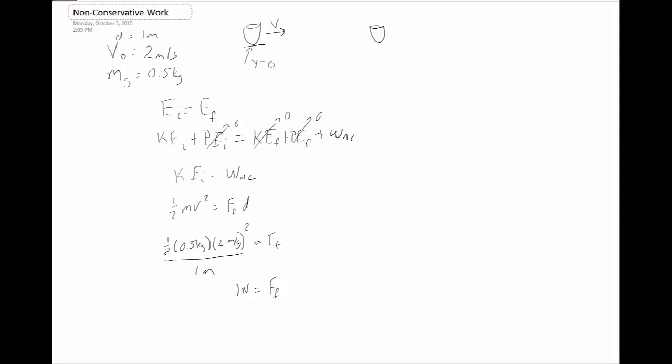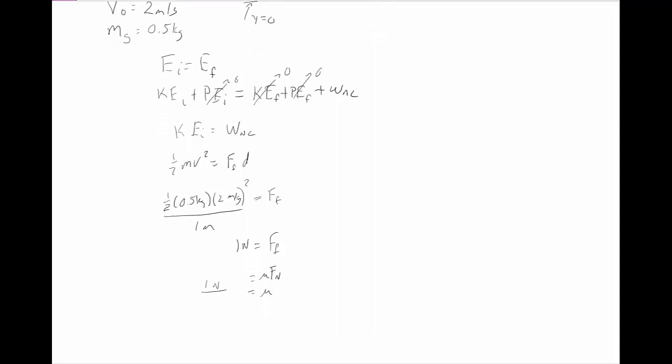You also can get, if you wanted to find the coefficient of friction, we know that the force of friction is always equal to the normal force times mu. And in this case, we happen to have one of those special cases where the normal force is equal to gravity, so we just get that mu is equal to one newton divided by the force of gravity in this case, which is mg, so 0.5 kilograms times, let's say just 10 for gravity, meters per second squared. And then when we do that all out, we get that mu is equal to 0.2, which is exactly what we got before.